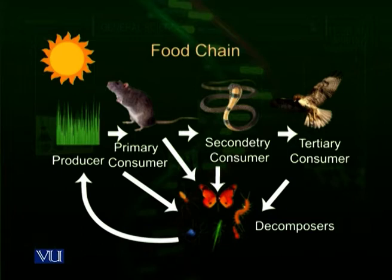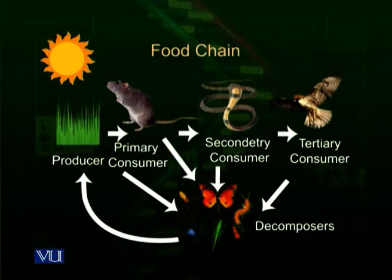Then there are hawks or eagles present in these ecosystems which eat upon the snakes. So we call them tertiary consumers, because the hawk or eagle gets its energy by acquiring a snake, which itself is a secondary consumer. We also call the hawk a secondary carnivore because it is eating a primary carnivore. The snake is a primary carnivore because it eats a herbivore animal — a mole or a rat. So the secondary consumer is a primary carnivore and the tertiary consumer is a secondary carnivore.